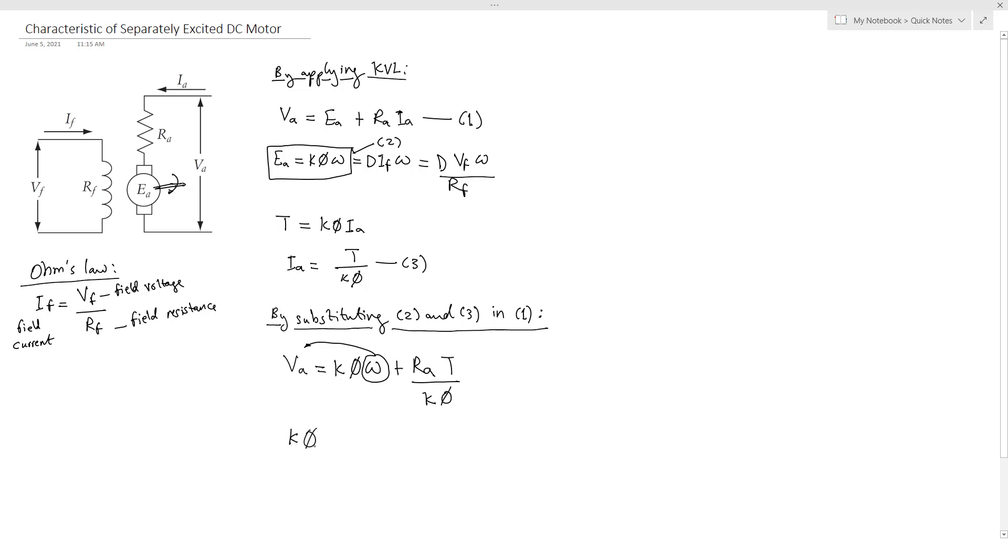K Phi Omega will equal VA minus RA T over K Phi. By dividing both sides by K Phi, we will have omega equals VA over K Phi minus RA T over K Phi squared.